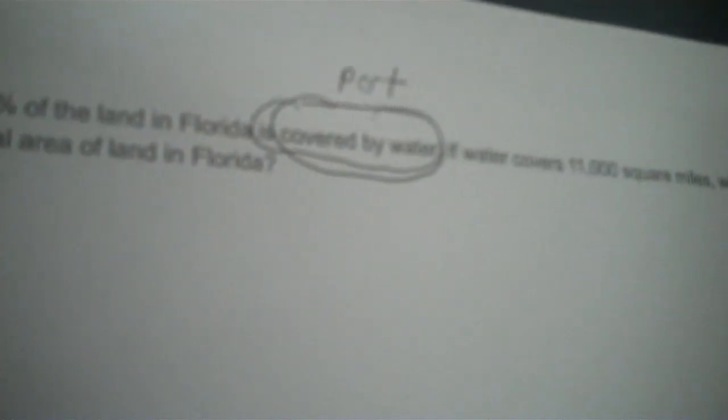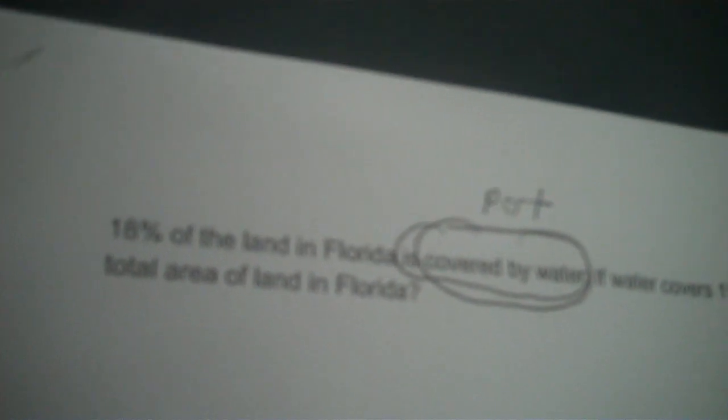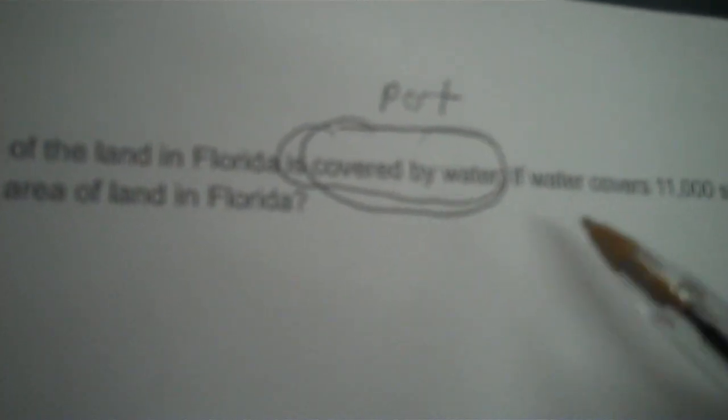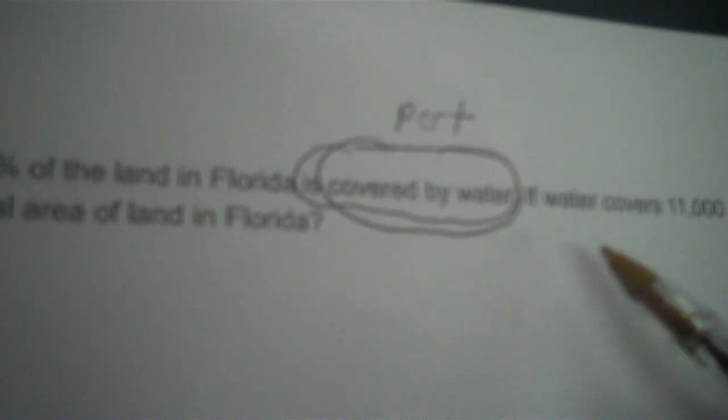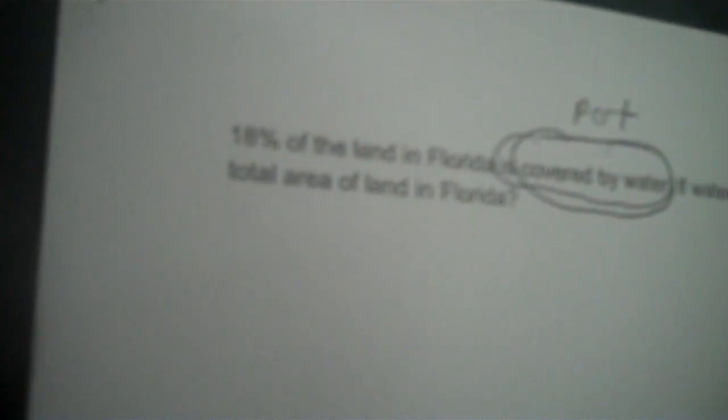I want to do some review problems and I'll get to the assignment. This is pretty short. 18% of the land in Florida is covered by water. If the water covers 11,000 square miles, what's the total land area in Florida? So the percent says 'of' after it, which means we need this chart.